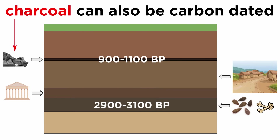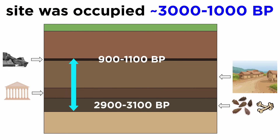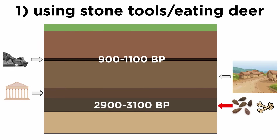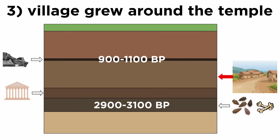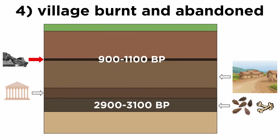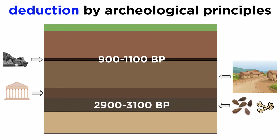Let's jot down some interpretations of the site based on our data. We know this site was occupied from around 3000 BP until around 1000 BP, meaning the site was occupied for a total of 2,000 years. Before a permanent population was established at the site, people were using stone tools and eating deer here. After this, a temple was built at the site, and a village grew around it. Eventually, sometime around 1000 BP, the village was burnt and shortly abandoned. We are able to deduce all of this from just a few archaeological principles.